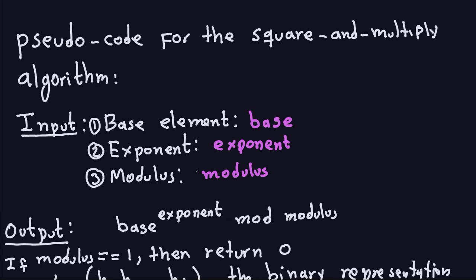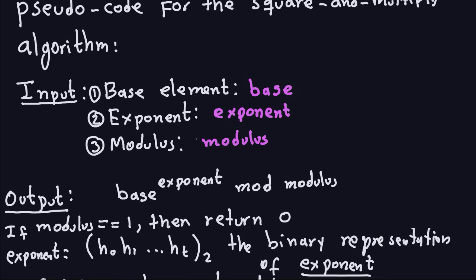We're going to assume all of these are positive numbers for simplicity. The first part of the algorithm handles the edge case: if the modulus is equal to 1, meaning we look at the remainder when divided by 1, we don't have to do any computation, because if we divide by 1 the division is exact, therefore there is no remainder — so the remainder is 0.